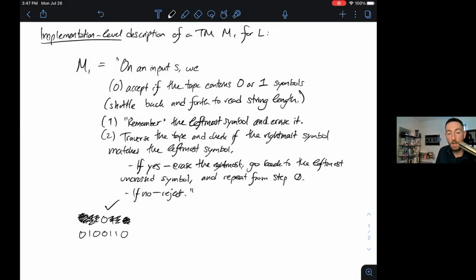If we tried a non-palindrome, we would start by erasing alternate symbols until finally we reached one that did not match its corresponding symbol. In this case, we'd reject. That's an implementation level description of the Turing machine. We'll see at least two more of those today as examples.